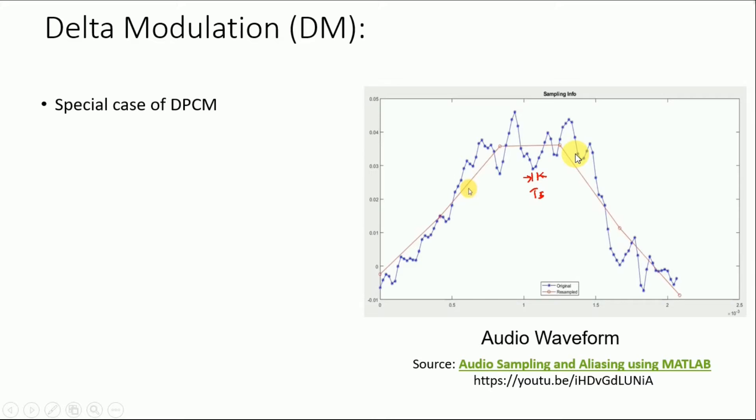But in the previous session we mentioned that PCM is not very bandwidth efficient. So we move towards differential pulse code modulation. And we said that because the samples are very correlated, they are very similar at successive instants of times.